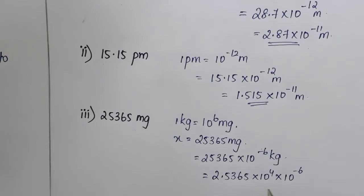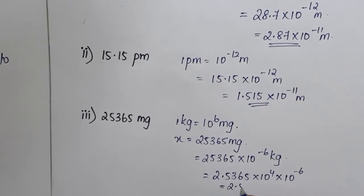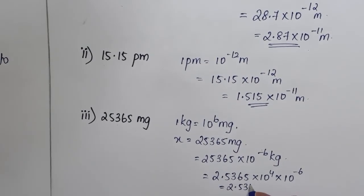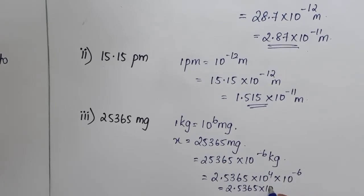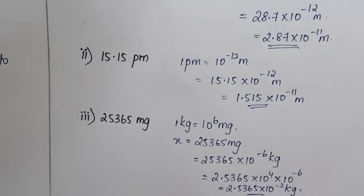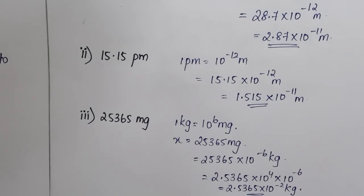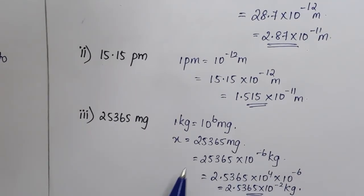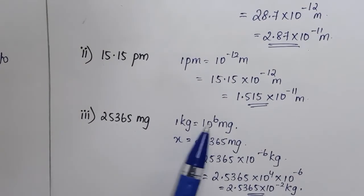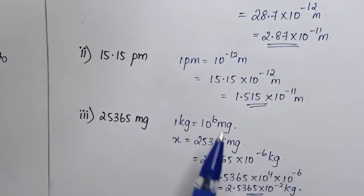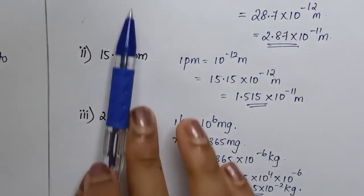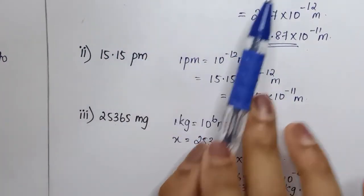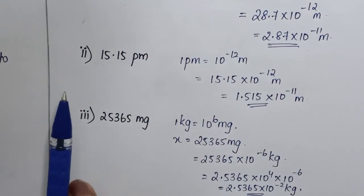So this will be equal to 2.5365 into 10 to the power minus 2 kilograms. That is the conversion for this problem. If we know these conversions, it's easy for us to find any given unit in its basic units.